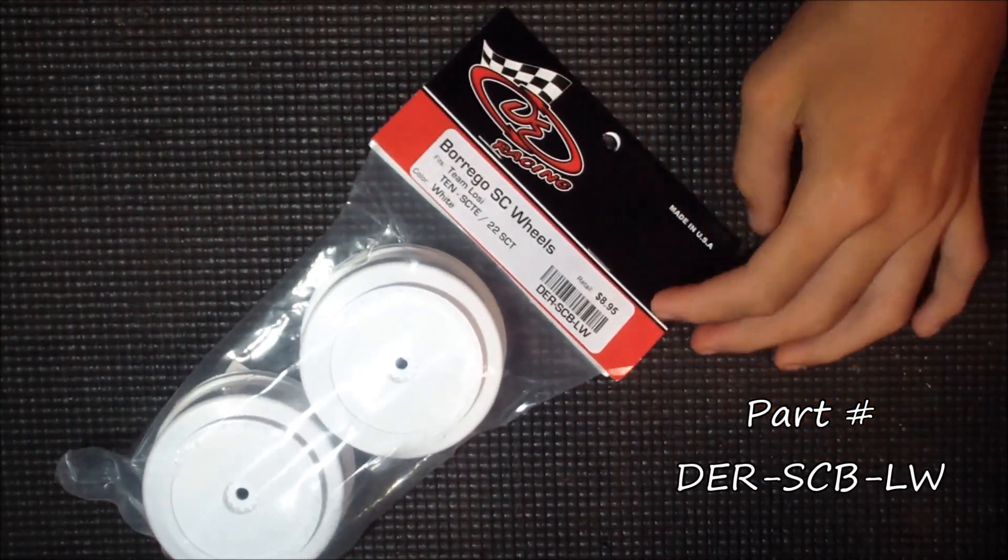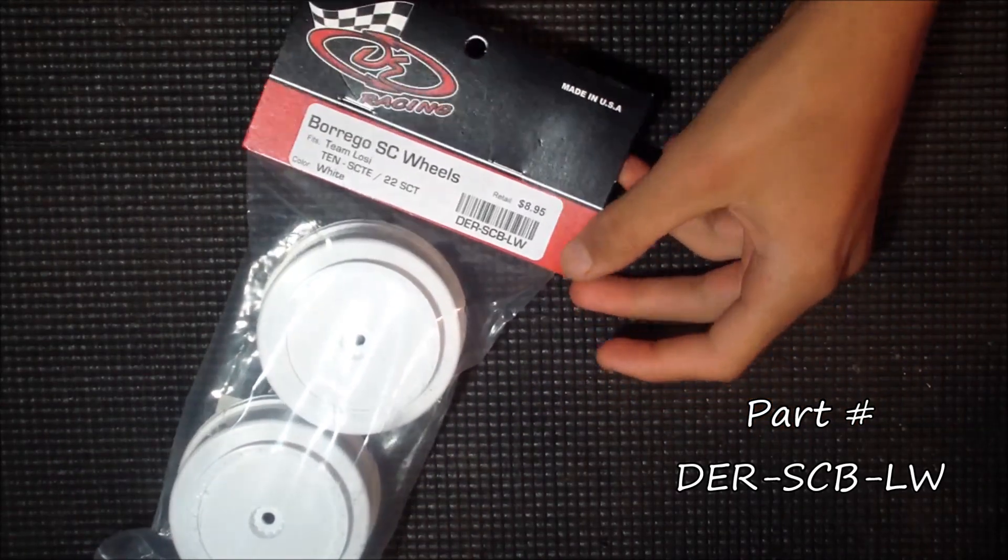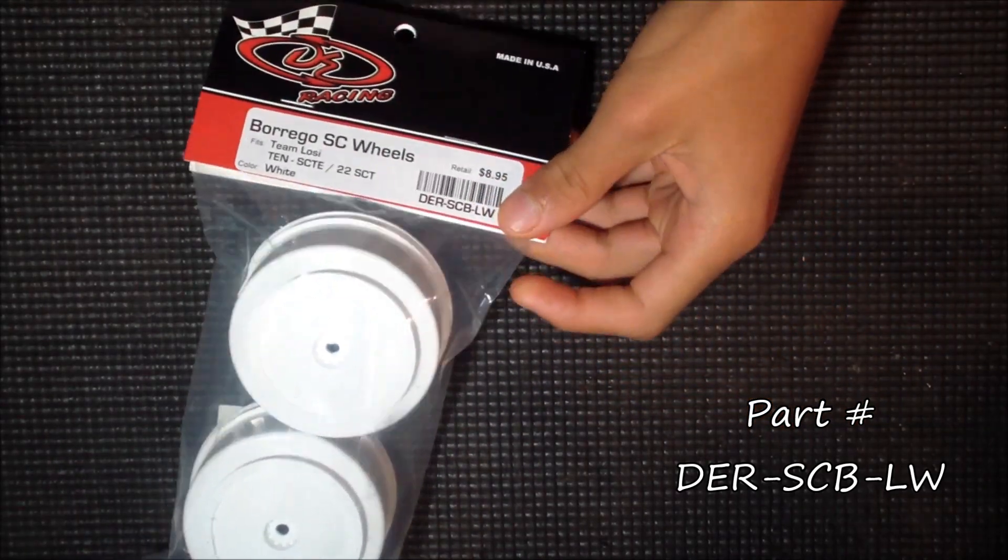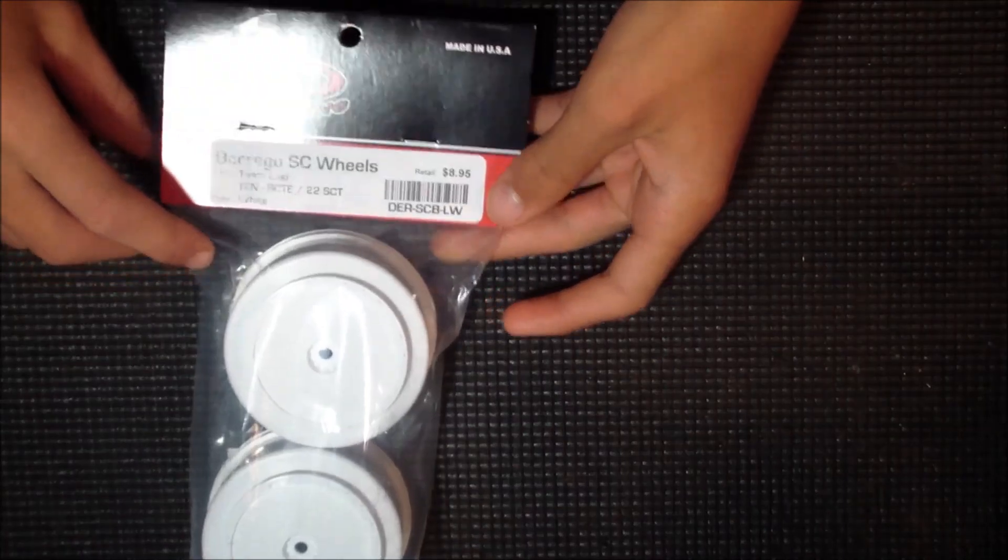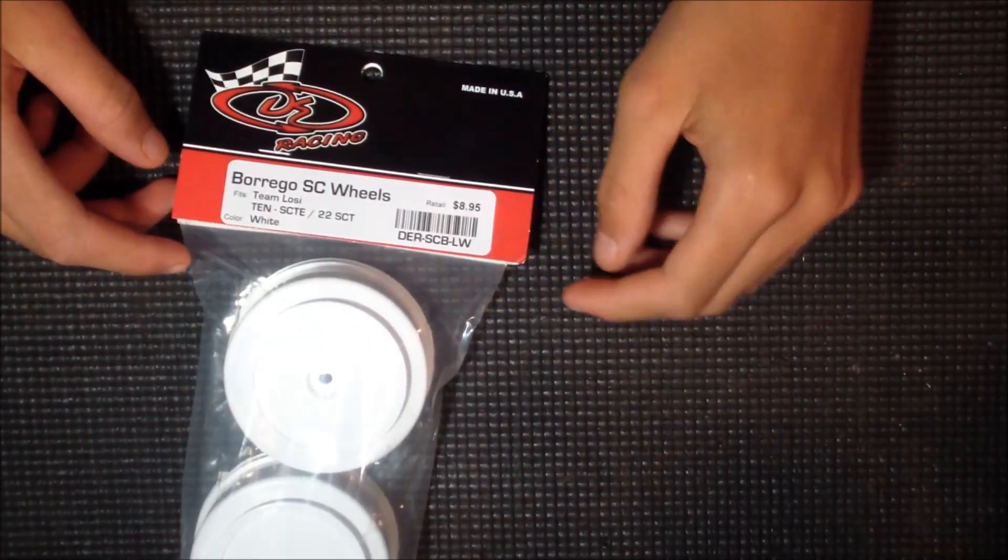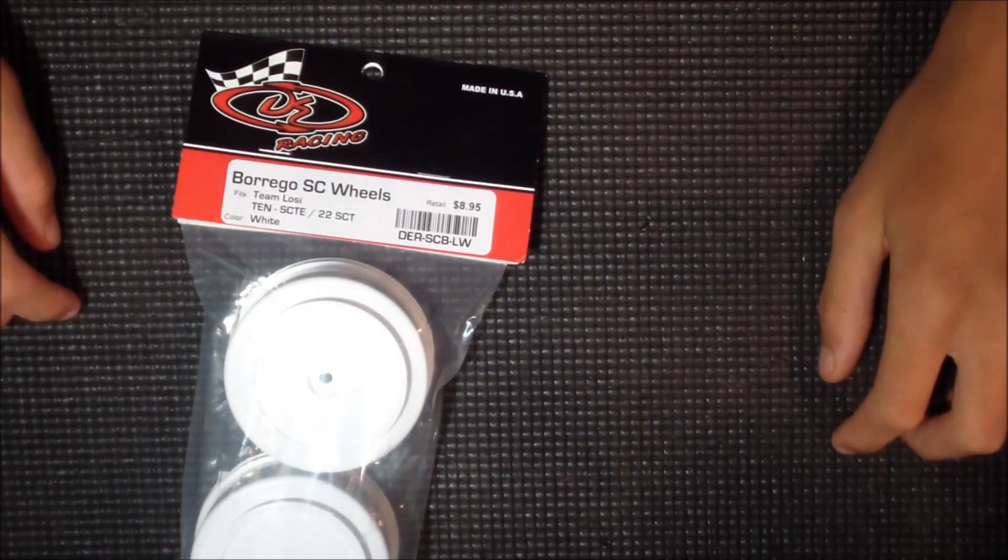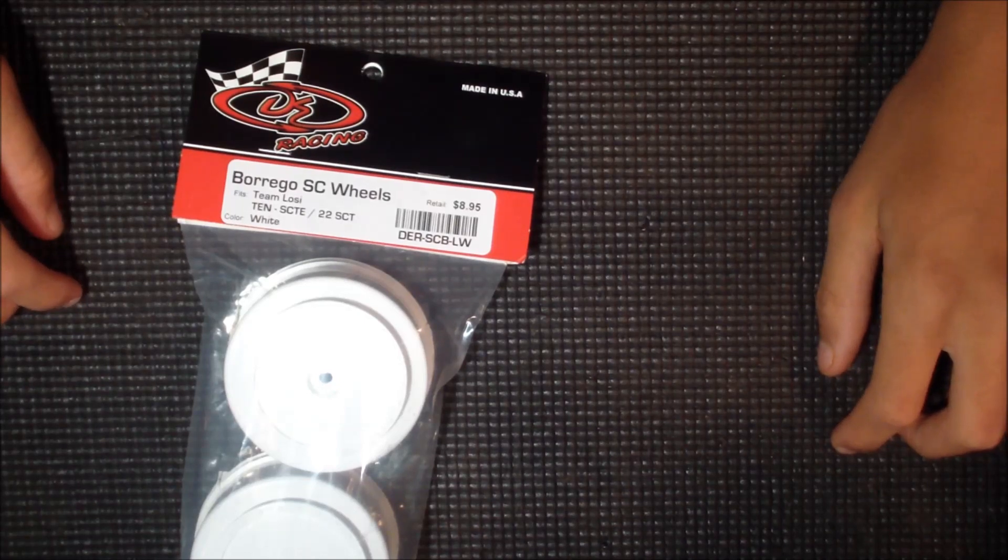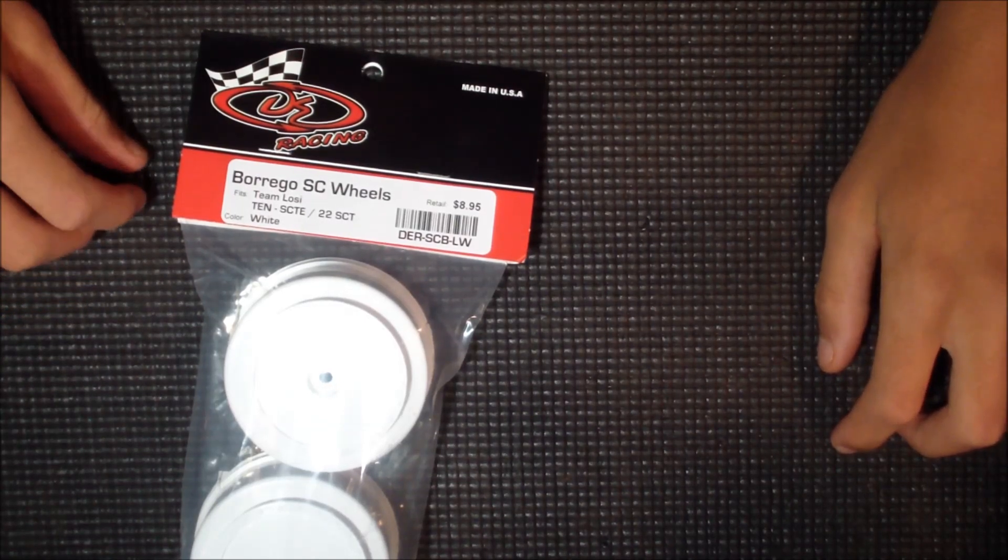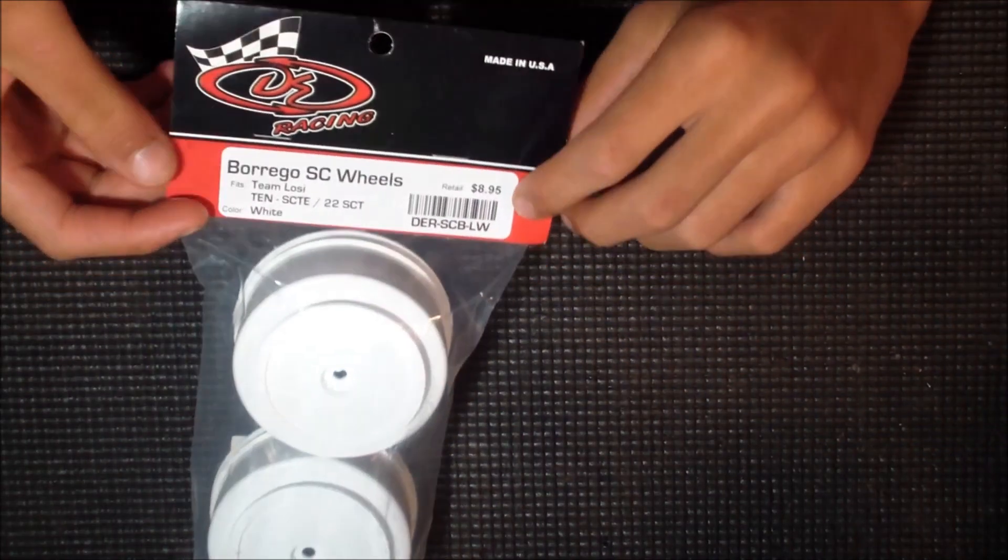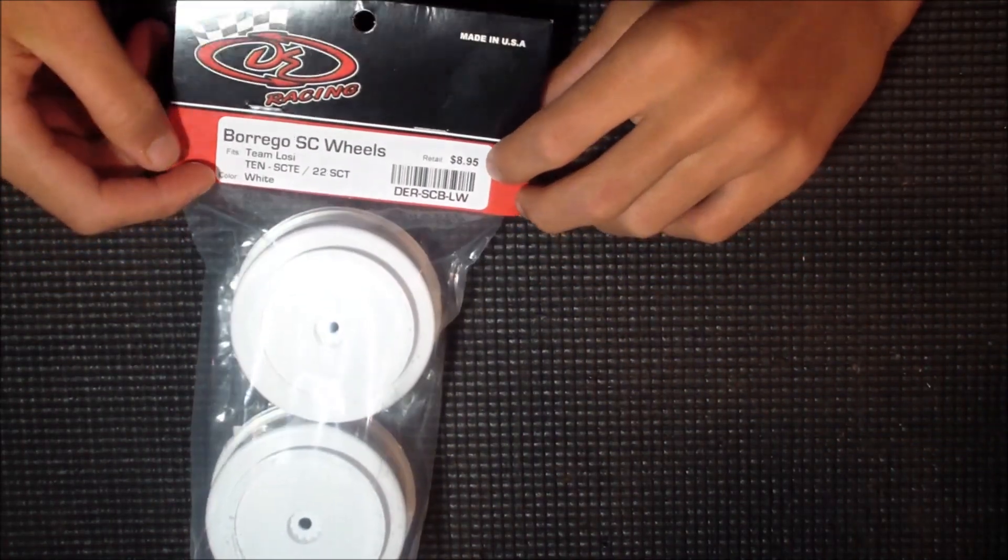These are the new DE Racing Borrego SC wheels, new dish wheels from DE Racing. It's starting to be really popular with a lot of short course drivers. You've known dish wheels to be on buggies, both A scale and 10 scale. And now the companies are starting to bring them to short course because a lot of people like them for the looks and the performance gain that dishes have.